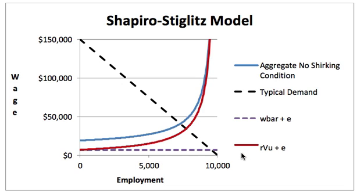RVU is the flow that an unemployed worker will earn, and it reflects earning w-bar immediately but then having the possibility of accessing a good job into the future. This is a somewhat odd curve to draw because the wage at which it will access a good job in the future is determined by the aggregate no-shirking condition. So the assumption is: if we're on this RVU plus e curve, when the employee actually lands a job, that will be the wage up on the blue curve — that's how this red curve is plotted.